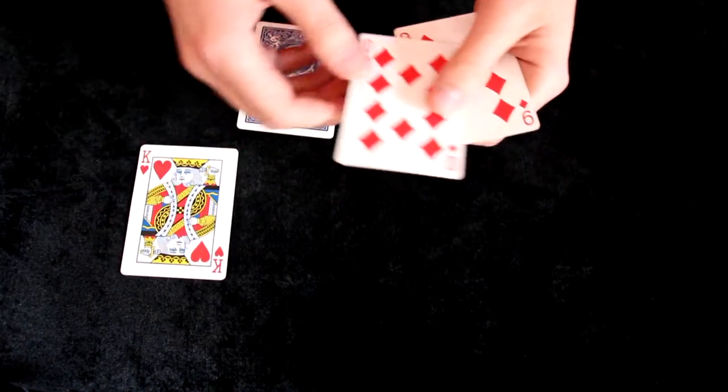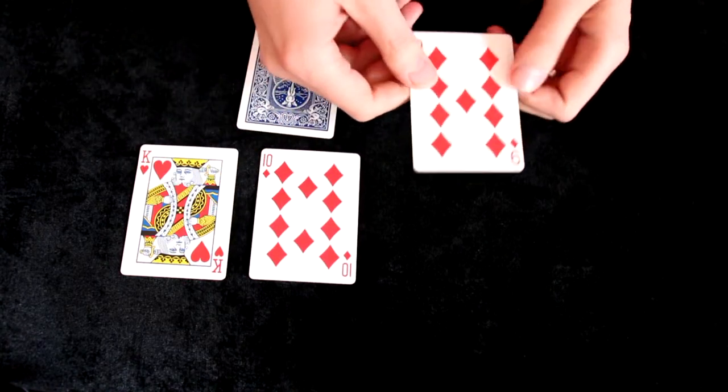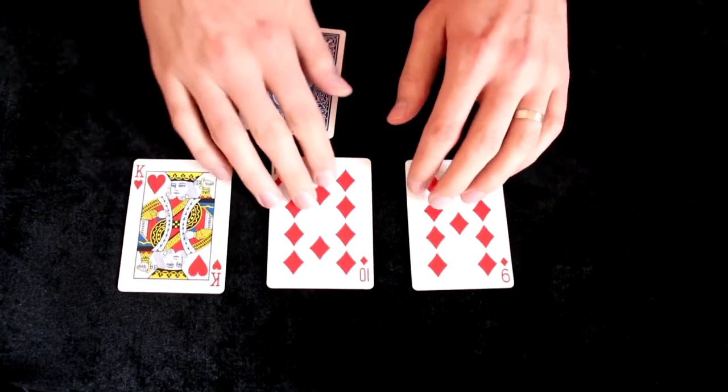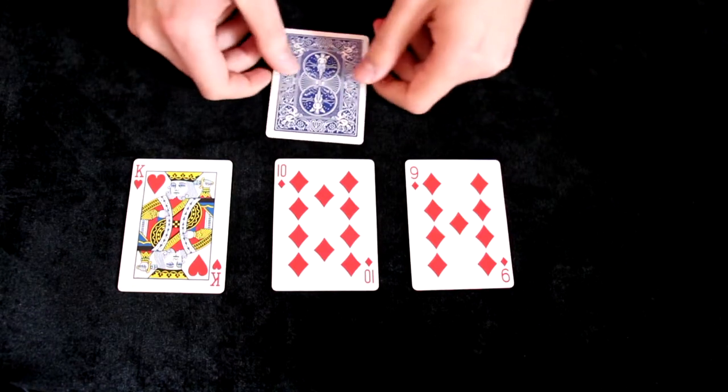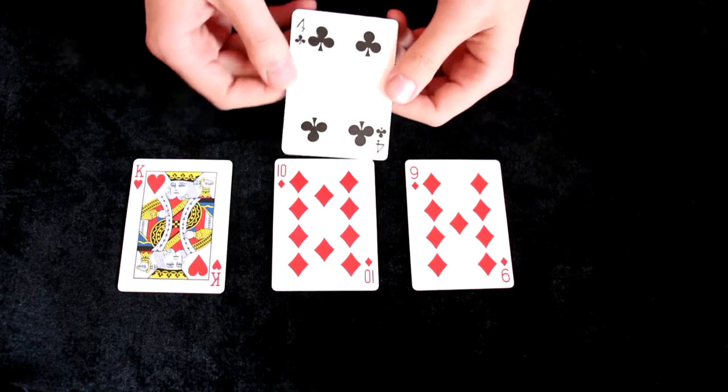I will show that the cards that were not selected are 9, 10 and king. And the last card that left on the table is their selection.